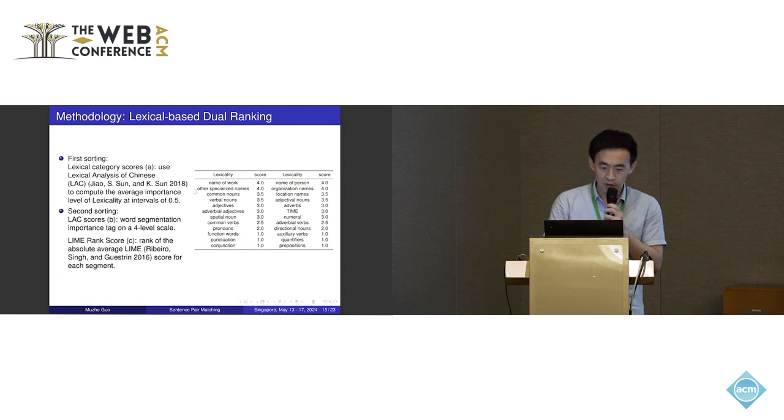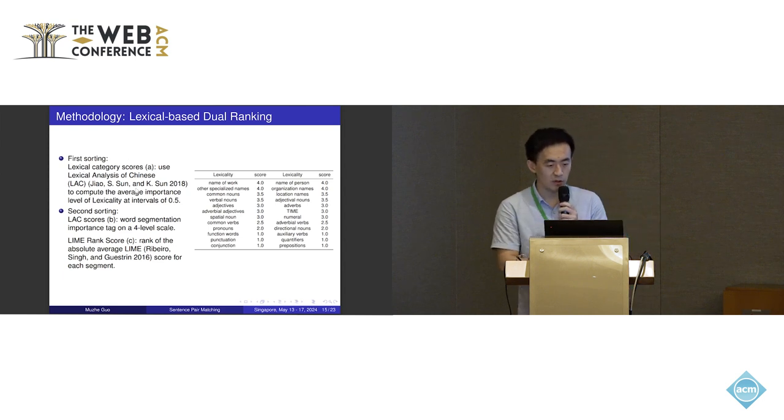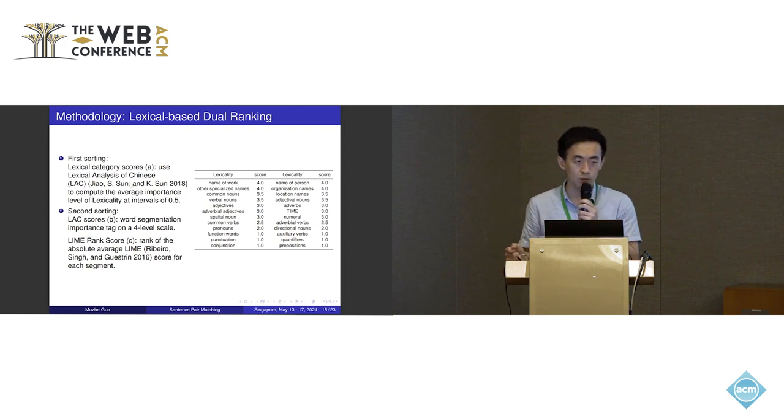That's why we introduced dual ranking. For the first ranking or first sorting, we introduce lexical category scores. These scores can be generated by the lexical analysis of Chinese using two tools. For the second sorting, we just use the traditional interpretation method. For example, we can use the LIME rank score.